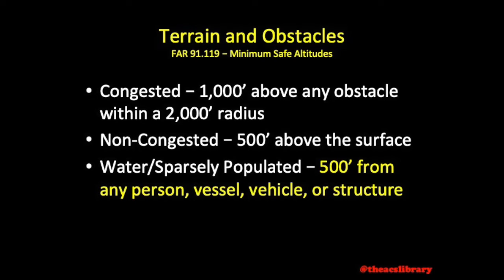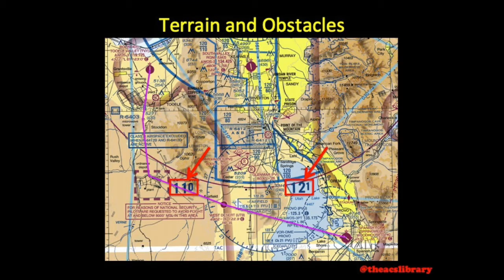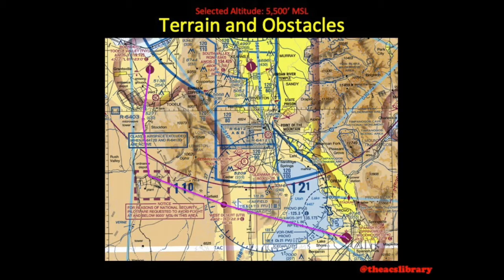If unsure about obstacle clearance, refer to the maximum elevation figures depicted and listed in each quadrant of the sectional or TAC. Based on our example flight plan from the previous video, our desired cruising altitude would be roughly 5,500 feet MSL. The entire route is at or below 5,000 MSL and will not bring us over any congested areas. Another obstacle to flight might be airspace.